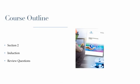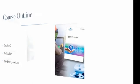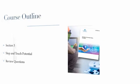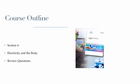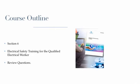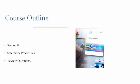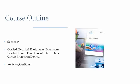In Section 2, the effects of electrical induction. In Section 3, the dangers of step and touch potential. In Section 4, the effects of electricity on the human body. In Section 5, electrical shock and arc flash hazards. Section 6, electrical safety training for the qualified electrical worker. Section 7, personal protective equipment. Section 8, safe work procedures. And in Section 9, we will look at corded electrical equipment, extension cords, ground-fault circuit interrupters, and circuit protection devices.